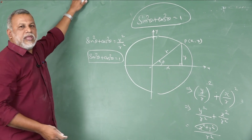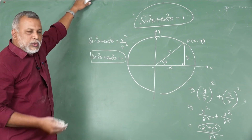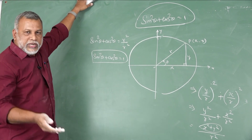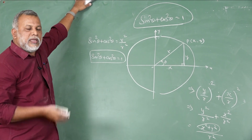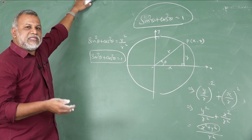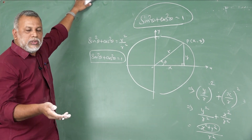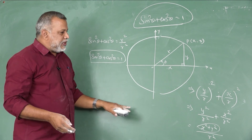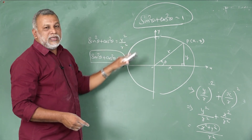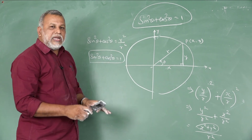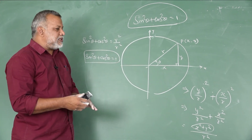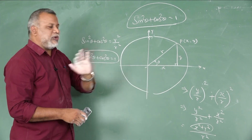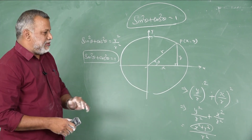In the same way, we are able to derive cosec²θ − cot²θ = 1 and sec²θ − tan²θ = 1. These are the fundamental trigonometric identities, already well known from your 10th standard syllabus.